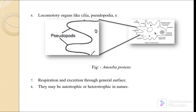The eighth characteristic is that they may be autotrophic or heterotrophic in nature. Autotrophic means they produce their own food with the help of sunlight — like photosynthesis — and do not depend on other organisms. Heterotrophic means they depend on other organisms for their food. So these organisms can be either autotrophic, producing their own food, or heterotrophic, depending on others for food.